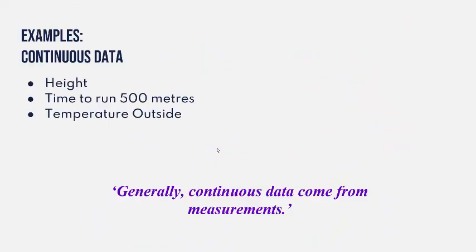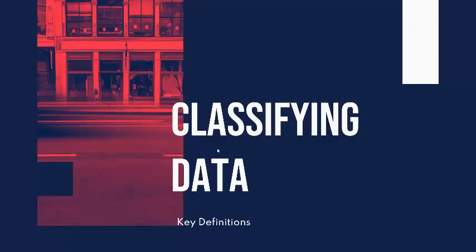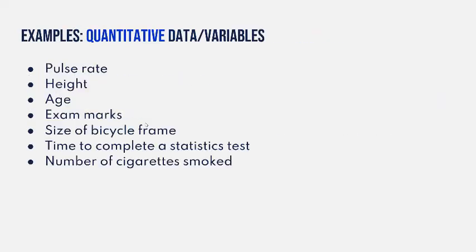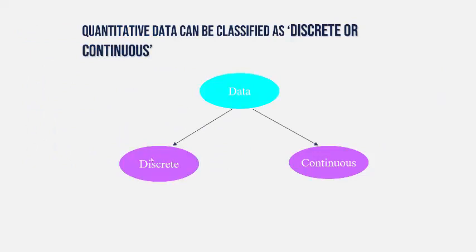Just as a quick recap, really important. Data initially starts as qualitative or quantitative. Qualitative is a categorical variable. Quantitative is a numerical measure. Numerical measures can then be broken down as either discrete or continuous. Discrete being count, continuous being measurements, numerical measurements.